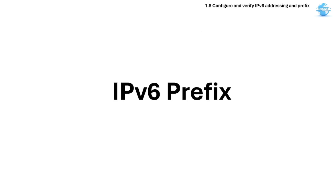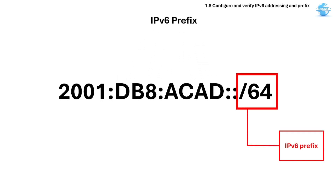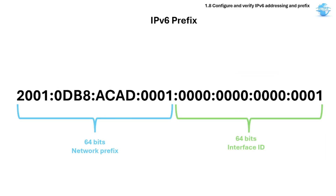Up next is the IPv6 prefix. An IPv6 prefix defines the network portion of an IPv6 address, similar to how IPv4 uses a subnet mask like /24. It is written in CIDR notation, meaning the first 64 bits are the network prefix and the remaining 64 bits are used for host or interface identifiers.